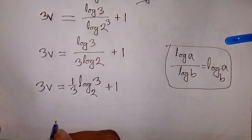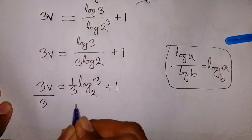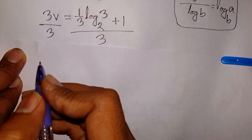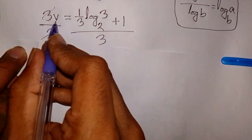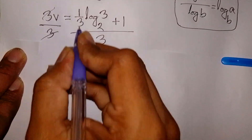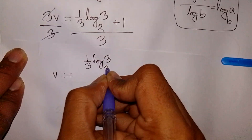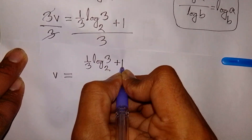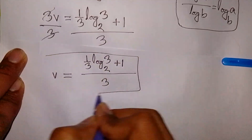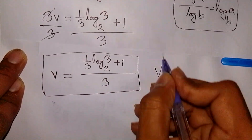Now we divide both sides by 3 because we need the value of V. This 3 and this 3 cancel. So V is equal to one-third times log base 2 of 3, plus 1 over 3. This is the value of V, and this is our final answer.